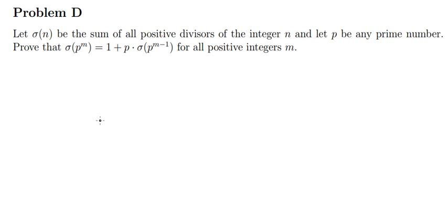Hey guys, today I want to show you how to answer this problem. Let σ(n) be the sum of all positive divisors of the integer n, and let p be any prime number. We need to prove that σ(p^m) = 1 + p · σ(p^(m-1)) for all positive integers m.